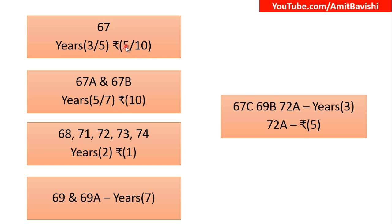For section 67: first-time offender gets 3 years imprisonment and a fine of 5 lakhs; second time it is 5 years and 10 lakhs. For 67A and 67B: 5 years first time, 7 years second time, and a fine of 10 lakhs each time. For sections 68, 71, 72, 73 and 74: 2 years imprisonment and 1 lakh fine. For 69 and 69A: 7 years imprisonment with no monetary penalty. For 67C, 69B and 72A: 3 years imprisonment, but a monetary fine of 5 lakhs applies only to 72A — there is no monetary fine for 67C and 69B.